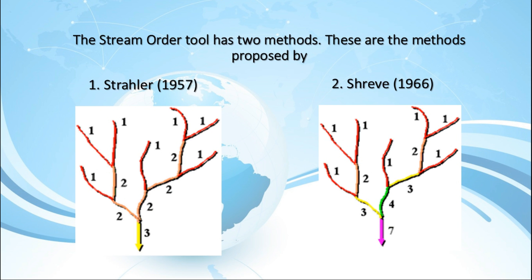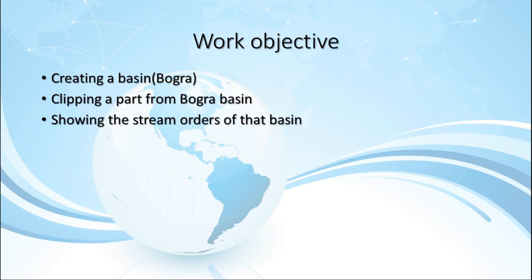Because the orders are additive, the numbers from the Shreve Method are sometimes referred to as magnitudes instead of orders. The magnitude of a link in the Shreve Method is the number of upstream links.